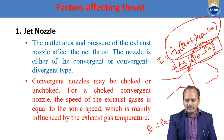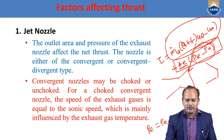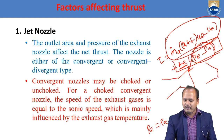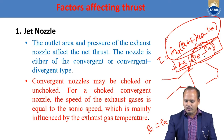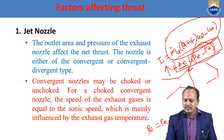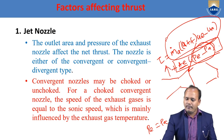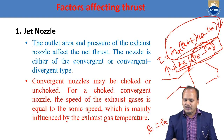If the nozzle is choked, you will have a pressure thrust component. If the nozzle is unchoked, the pressure thrust value becomes completely zero. Even after the nozzle is choked, if the exit pressure keeps increasing, the pressure thrust contribution increases. But that will reduce the momentum thrust.